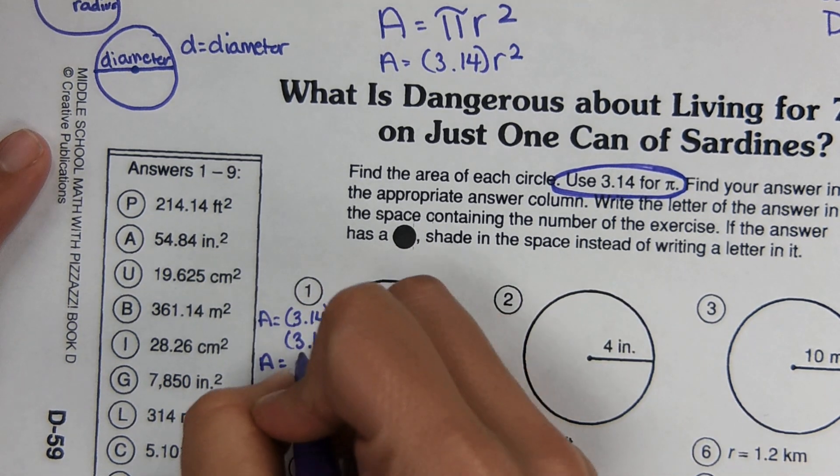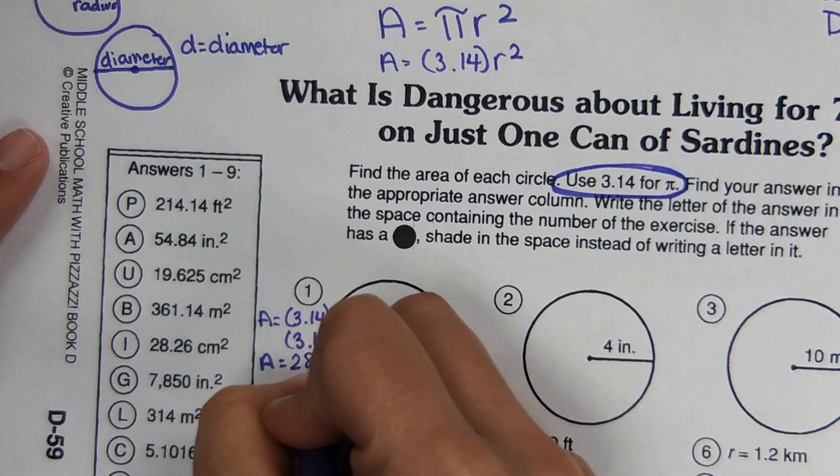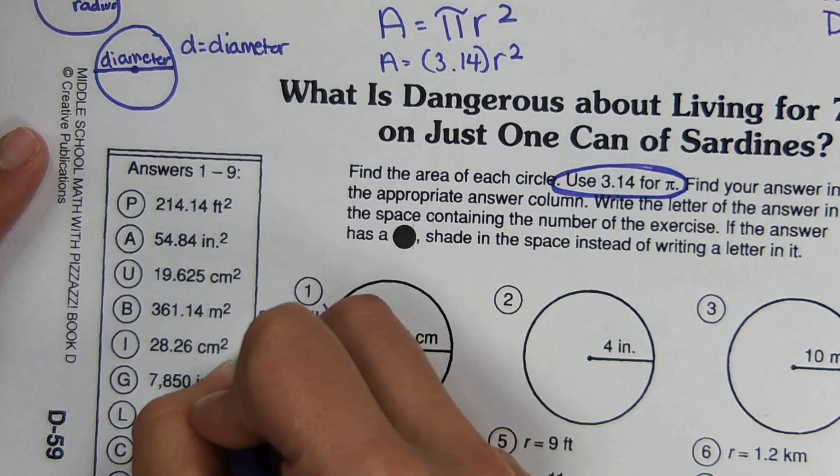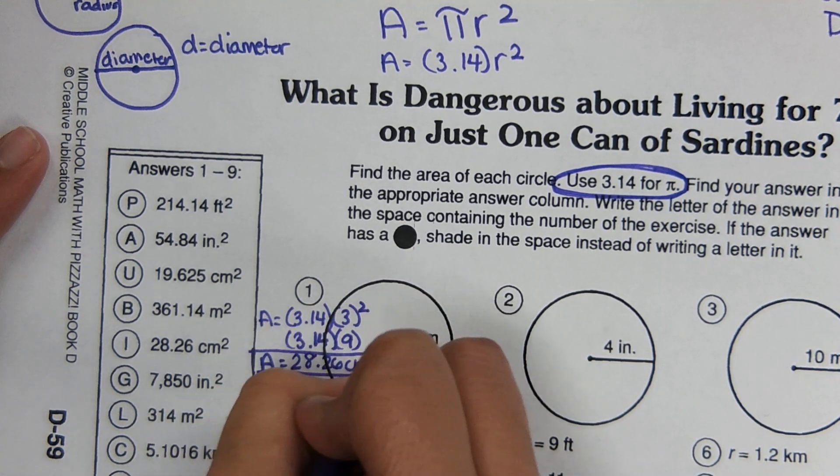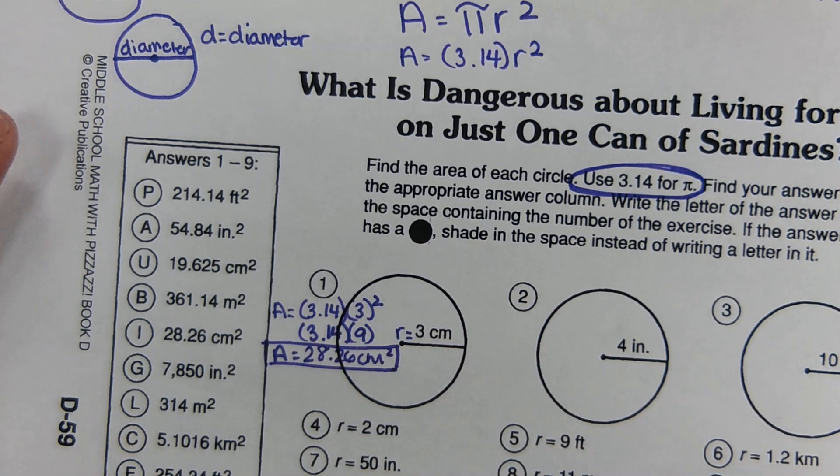And it comes out to 28.26. So in a calculator, just 3.14 times nine comes out to 28.26 centimeters squared. So that's the area of that circle.